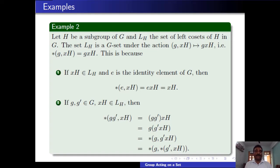For the second property, let g and g' belong to G and xH belong to X = LH. By definition of star, star(gg', xH) = (gg')xH. By the associative property of the group, we can write this as g(g'xH), which is star(g, g'xH). Since g'xH = star(g', xH), we have star(gg', xH) = star(g, star(g', xH)). So the second property is also satisfied. Thus G acts on LH via left multiplication.